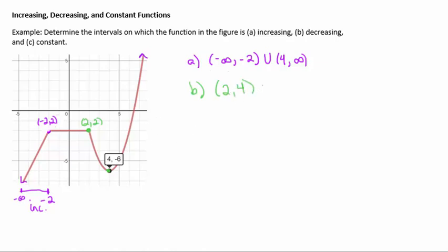Then for c we are asked where is it constant. So constant just means it's not increasing and it's not decreasing. So that only leaves this piece in the middle where it's flat. It's not going up and it's not going down. That happens if you look from negative two to positive two.